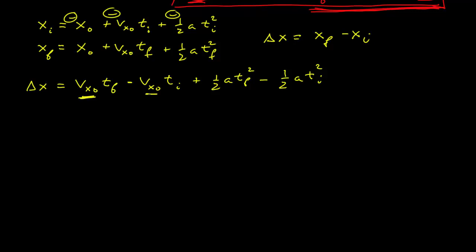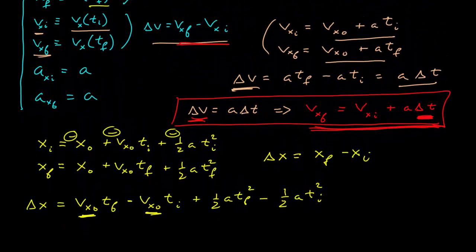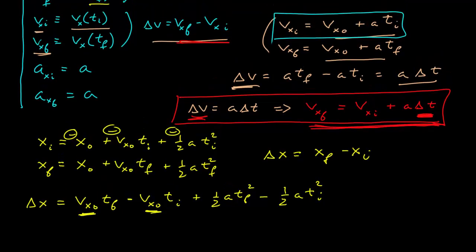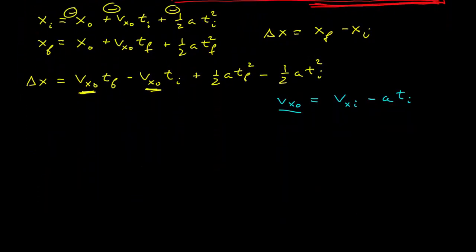The problem is I may not know what the velocity at t equals zero is if my initial and final times are something other than zero. I'd like to find this expression in terms of my initial and final velocity. I can do that using the velocity expression. I note that the velocity at t equals zero is equal to my velocity at the initial time t_i, minus a·t_i — just solving that expression for the velocity at t equals zero. Now I'm going to substitute that in.